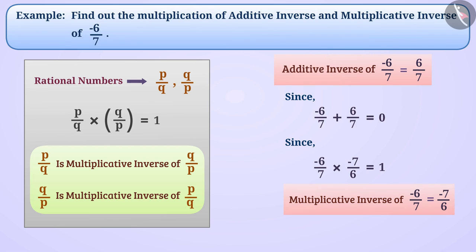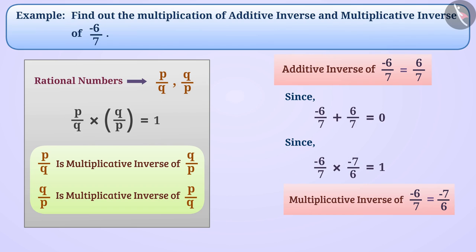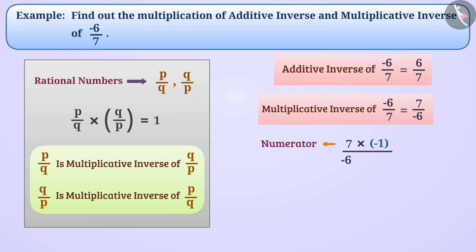Can you tell me why we didn't change the place of the negative sign? Because the multiplicative inverse of minus 6 by 7 is 7 by minus 6. But if we multiply minus 1 to the numerator and denominator, then there will be no change in the value of the number and we get minus 7 by 6. Remember that, generally, we represent negative signs with the numerator only.